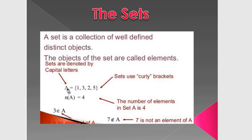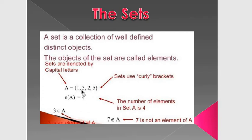If I have a set A equals {1, 3, 2, and 5}, I will put the elements of the set between two curly braces. The number of A means the number of elements of A. I have how many elements? Four elements.